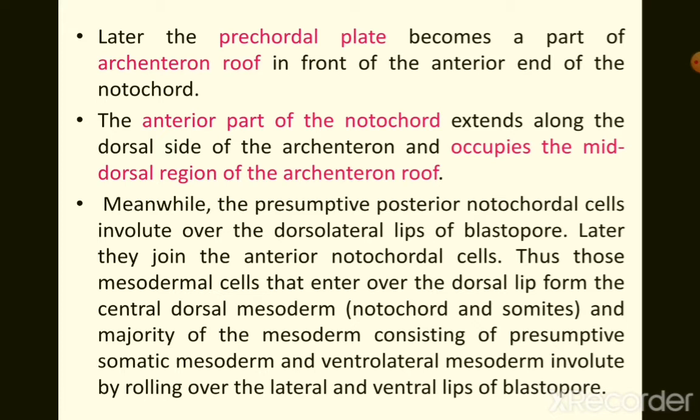Later, the pre-cordal plate becomes part of the roof of the archenteron, and the anterior notochord extends along the dorsal side of the archenteron, occupying its mid-dorsal region. The presumptive posterior notochord cells involute over the dorsolateral lips of the blastopore and join the anterior notochord cells. Mesodermal cells entering over the dorsal lip form the central dorsal mesoderm, giving rise to the notochord and somites. The majority of mesoderm — presumptive somatic and ventrolateral mesoderm — involutes by rolling over the lateral and ventral lips of the blastopore.